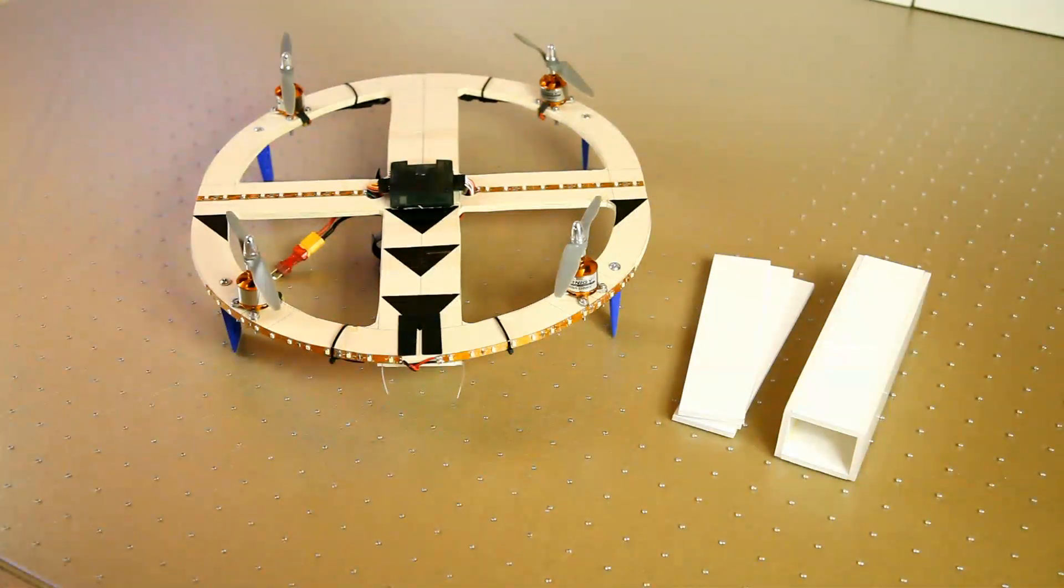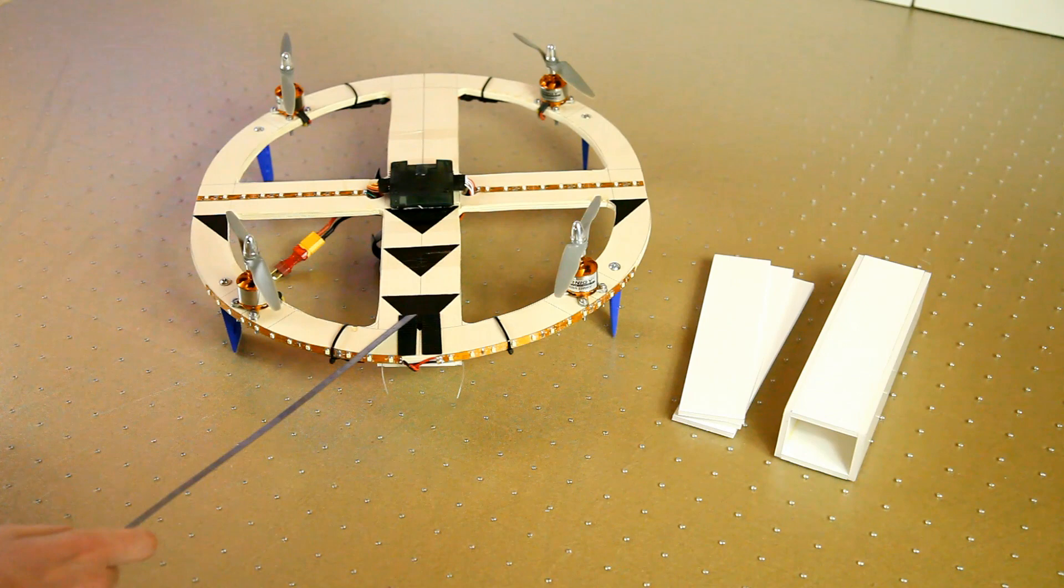Hi there, welcome back to the DutchRC channel for another build series. This is a kickoff for a new quadcopter build, and as you can see, this is an older build, my previously built quadcopter. It's mainly wood and it's circular.